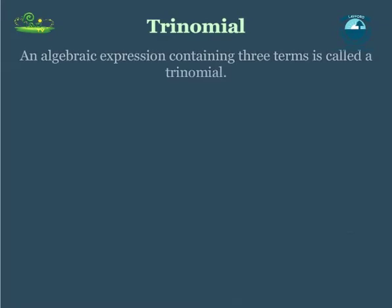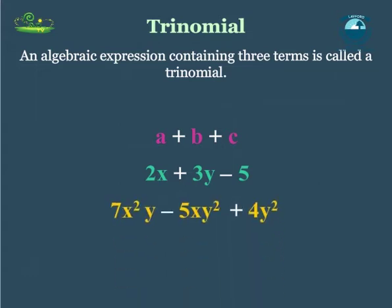Trinomial: An algebraic expression containing three terms is called a trinomial. Examples of trinomial are a plus b plus c, 2x plus 3y minus 5, 7x square y minus 5xy square plus 4y square. All these are the examples of trinomials.